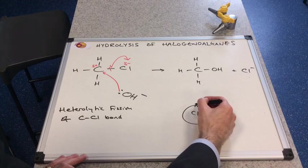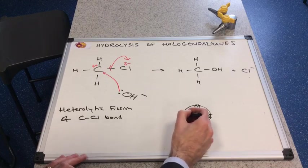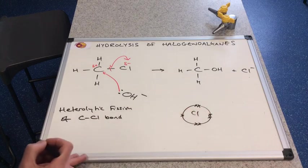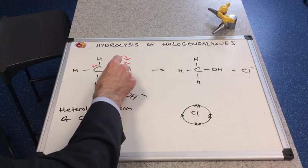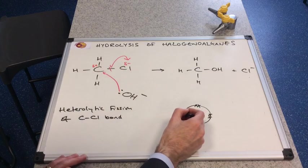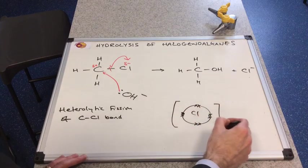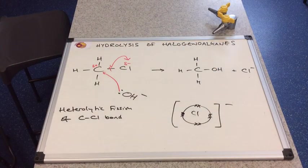We do a quick dot and cross diagram. It has seven electrons of its own in the outer shell, and it's received, so there's the seventh one, it's received the electron that belonged to the carbon from the bond in this heterolytic fission. And so it is in this form which is a chloride ion.